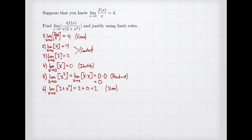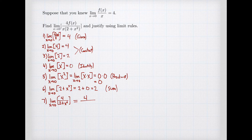Now we have our denominator and can construct the limit of the quotient 4/(2+x²). We know the limit of 4 is 4 and the limit of 2+x² is 2. By the limit of a quotient rule, the limit of 4/(2+x²) equals the limit of 4 divided by the limit of 2+x², which is 4/2 = 2.